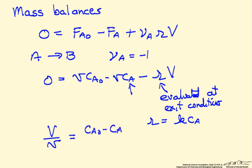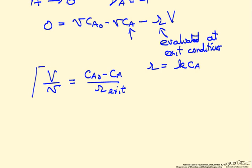CA0 minus CA divided by the rate of reaction, where we're going to indicate that this is evaluated at the exit conditions. This is the CSTR mass balance.